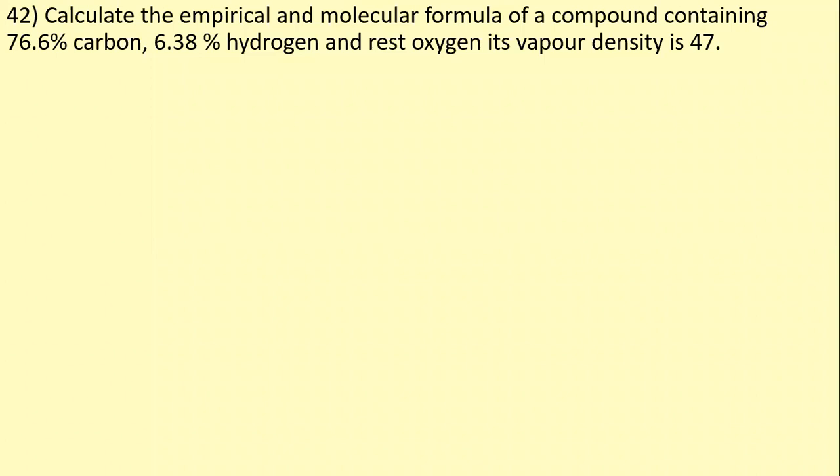Now comes question number 42. The question is: calculate the empirical and molecular formula of a compound containing 76.6% of carbon, 6.38% of hydrogen, and the rest is oxygen. The vapor density is 47, as given in the question.